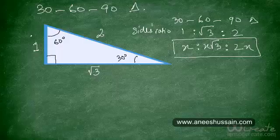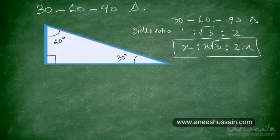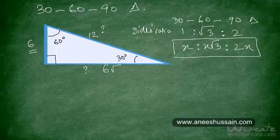The easiest way to remember this is that the hypotenuse is always twice the shortest side — but this is true only in a 30-60-90 triangle. For example, if the side opposite 30° has a length of 6, then the hypotenuse will have a length of 12. The side opposite 60° equals √3 times the side opposite 30°, so if that side is 6, this side is 6√3.